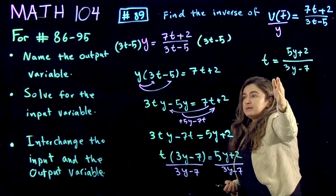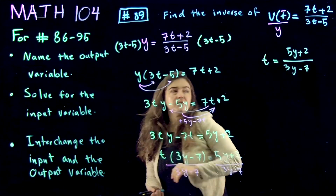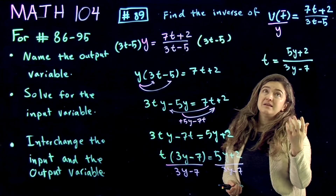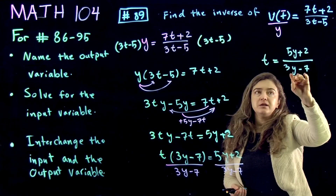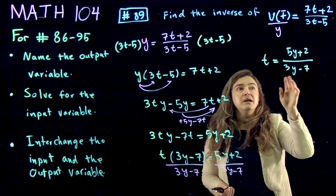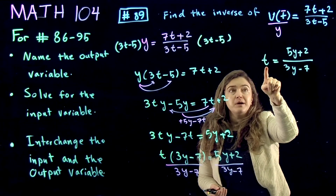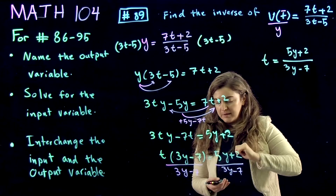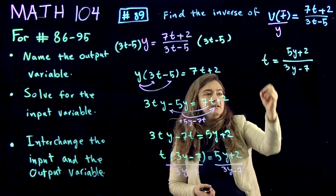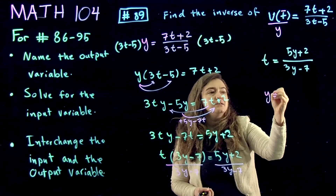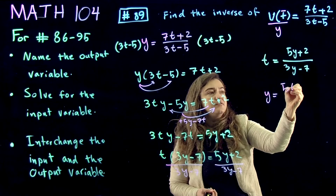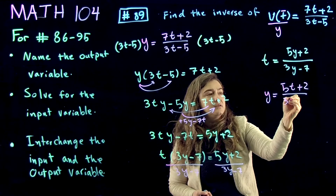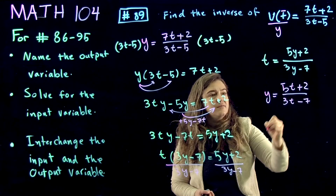So far, all we did is solve for the independent variable t. The last step is to interchange the input and output variables. Wherever I see t, I replace it with y, and wherever I see y, I replace it with t. So I get y is equal to 5t plus 2 divided by 3t minus 7.